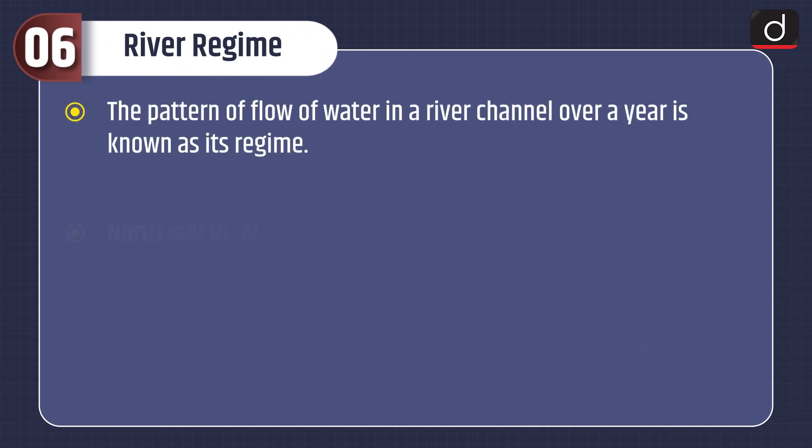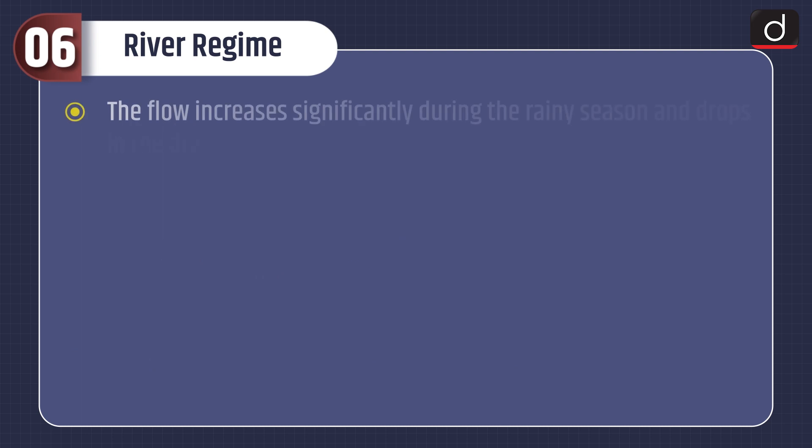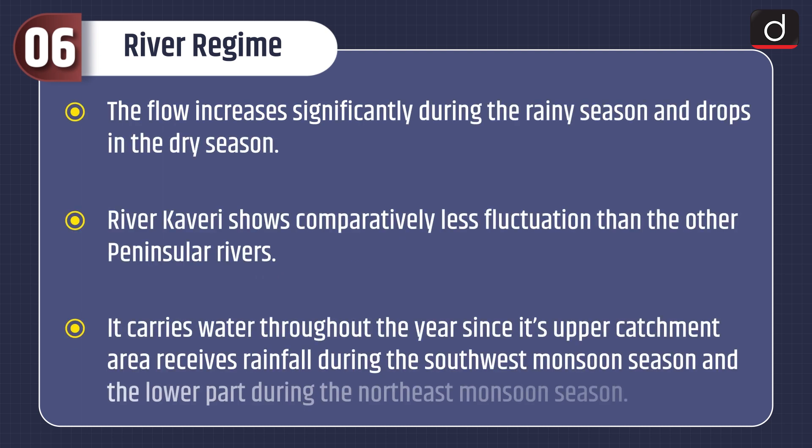The pattern of flow of water in a river channel over a year is known as its regime. North Indian rivers originating from the Himalayas are perennial, as they are fed from glaciers and rainfall. The rivers of southern India do not originate from glaciers and their water flow fluctuates — increasing significantly during the rainy season and dropping in the dry season. River Kaveri shows comparatively less fluctuation, as its upper catchment receives rainfall during the southwest monsoon and the lower part during the northeast monsoon.